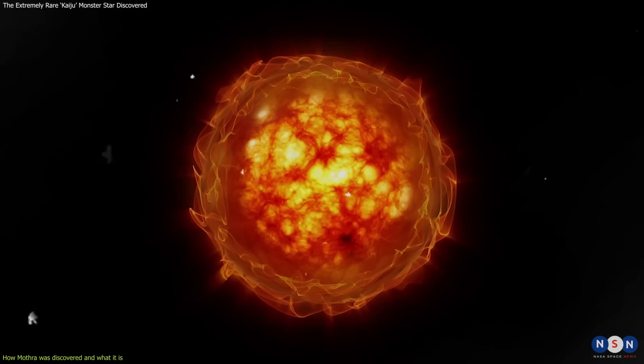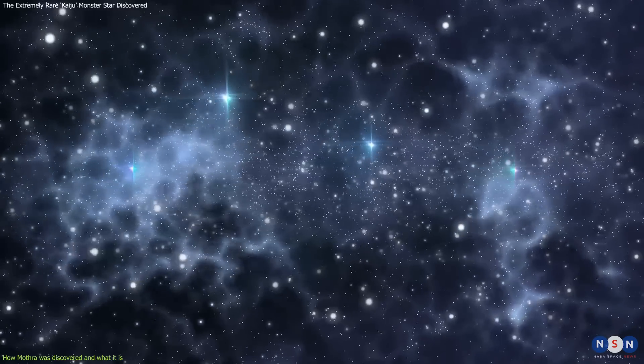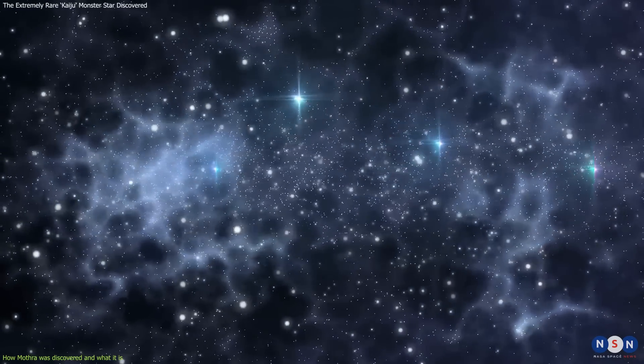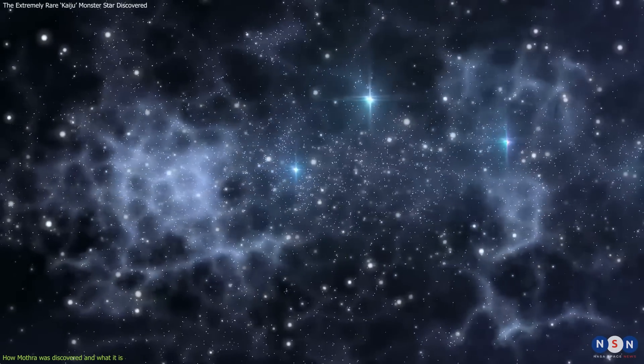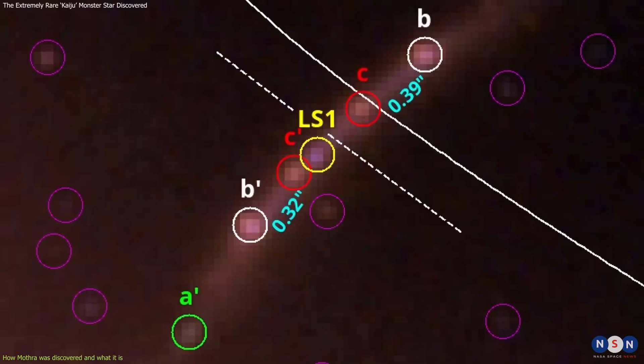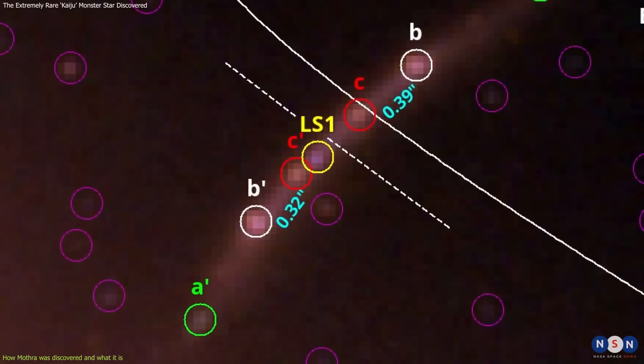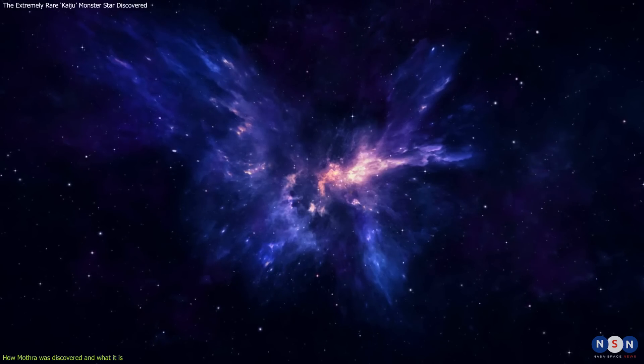Alternatively, dark matter could be interacting with its host galaxy, triggering star formation and creating an environment that favors the formation of red supergiants. However, both scenarios are very speculative and require more data and analysis to be confirmed.